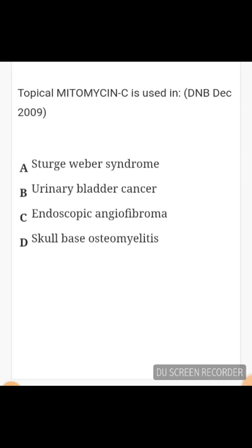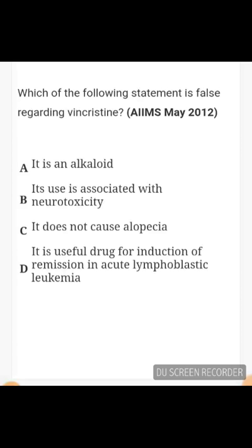Topical mitomycin C is used for urinary bladder carcinoma. Mitomycin C is an anti-tumor antibiotic with alkylating agent-like properties, used mainly for superficial carcinoma of the bladder. Hemolytic uremic syndrome is a major complication of mitomycin C. This drug has a radiomimetic effect and sensitizes hypoxic tumor cells. It is also used in ENT. The drug of choice for superficial bladder CA is BCG given intravesically.